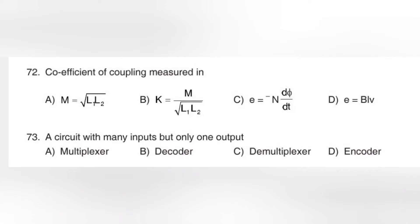Next question: Coefficient of coupling measured in. The formula is K = M / √(L1·L2), where M is the mutual inductance and L1, L2 are the inductances. The coefficient of coupling is the measure of magnetic effect passing between L1 and L2.